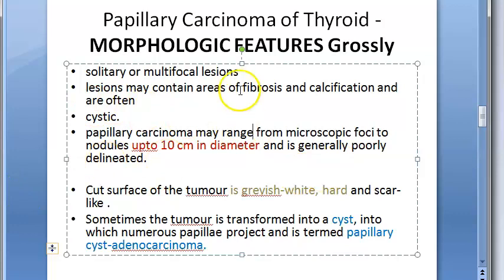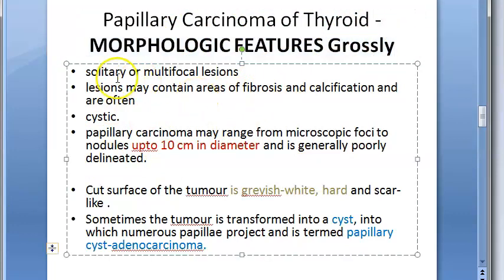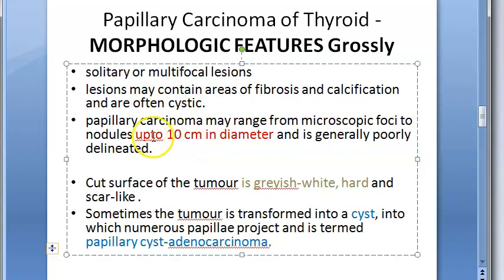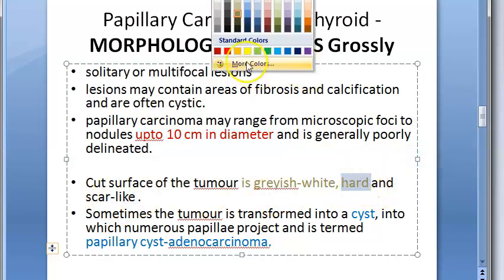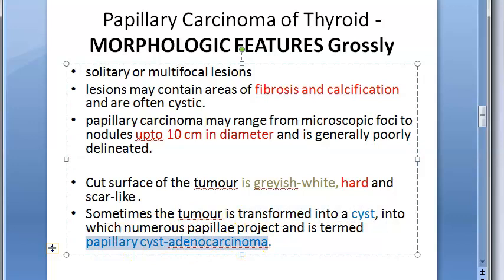For gross morphological features: it is a solitary or multifocal lesion. The lesion will contain fibrosis and calcification, and it is often cystic. It can be up to 10 centimeters in diameter. When you cut it you will see a greyish-white hard scar-like surface — hard because of the calcification and fibrosis. Sometimes it can become cystic, in which case it is called papillary cyst adenocarcinoma of thyroid.